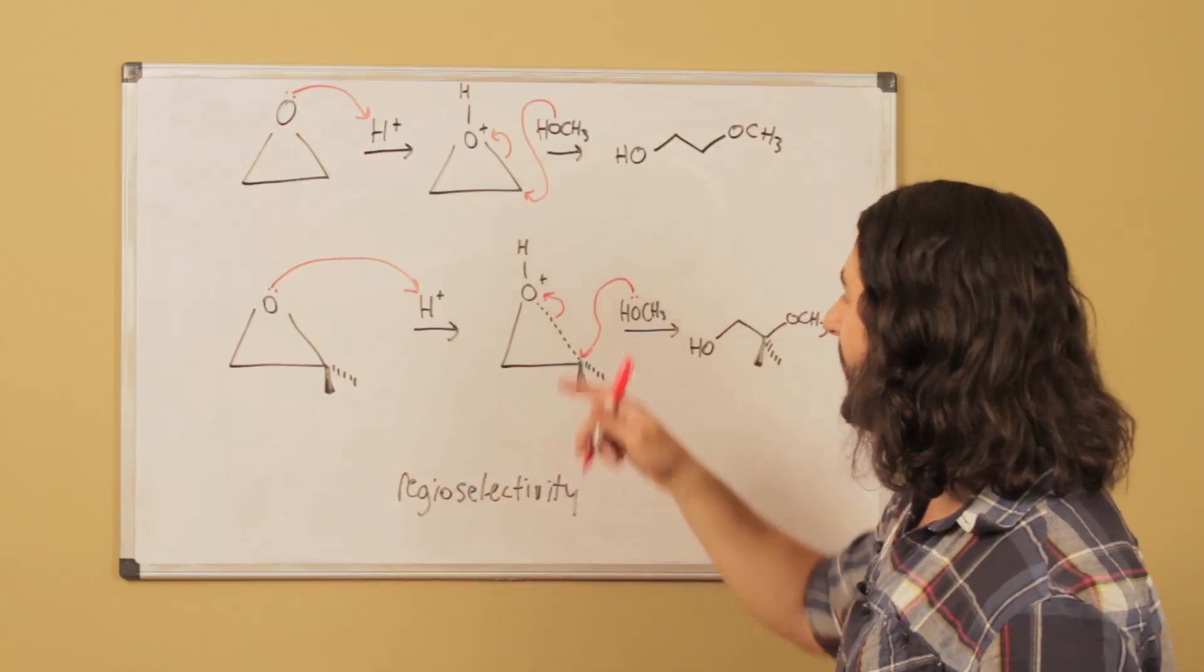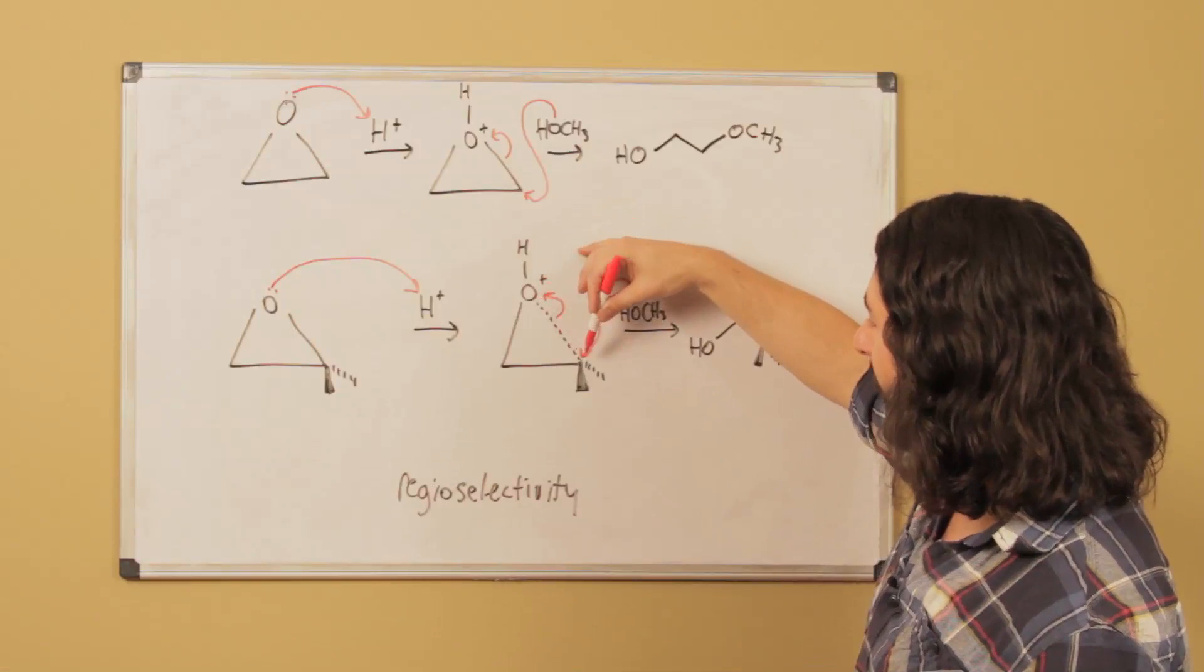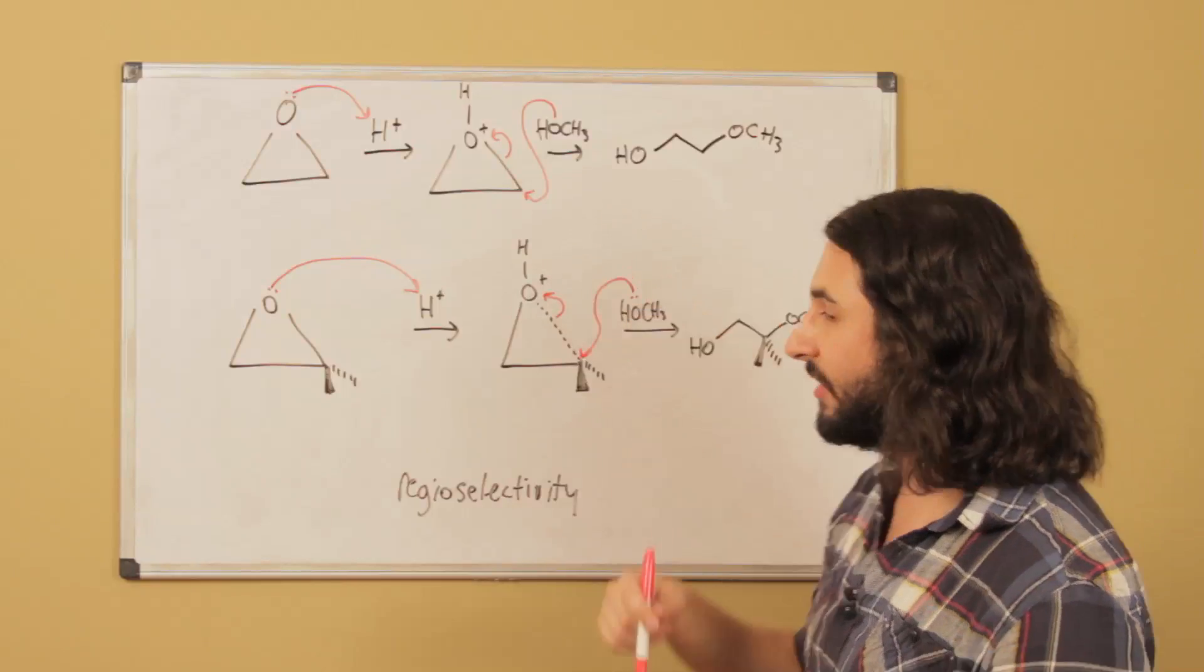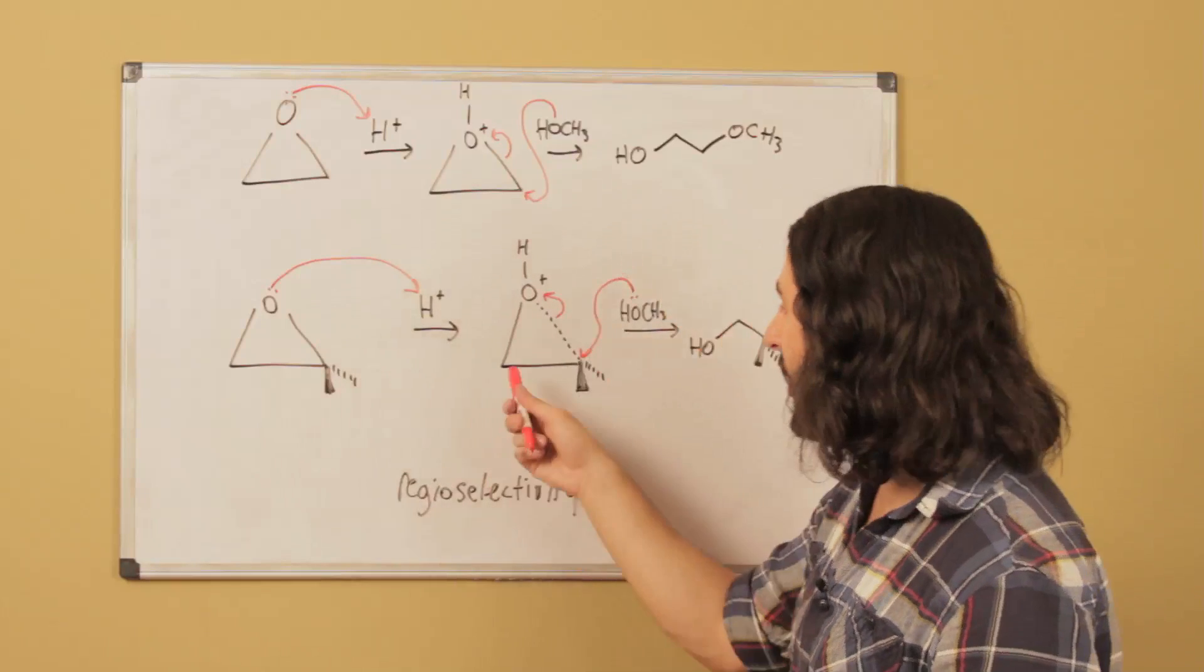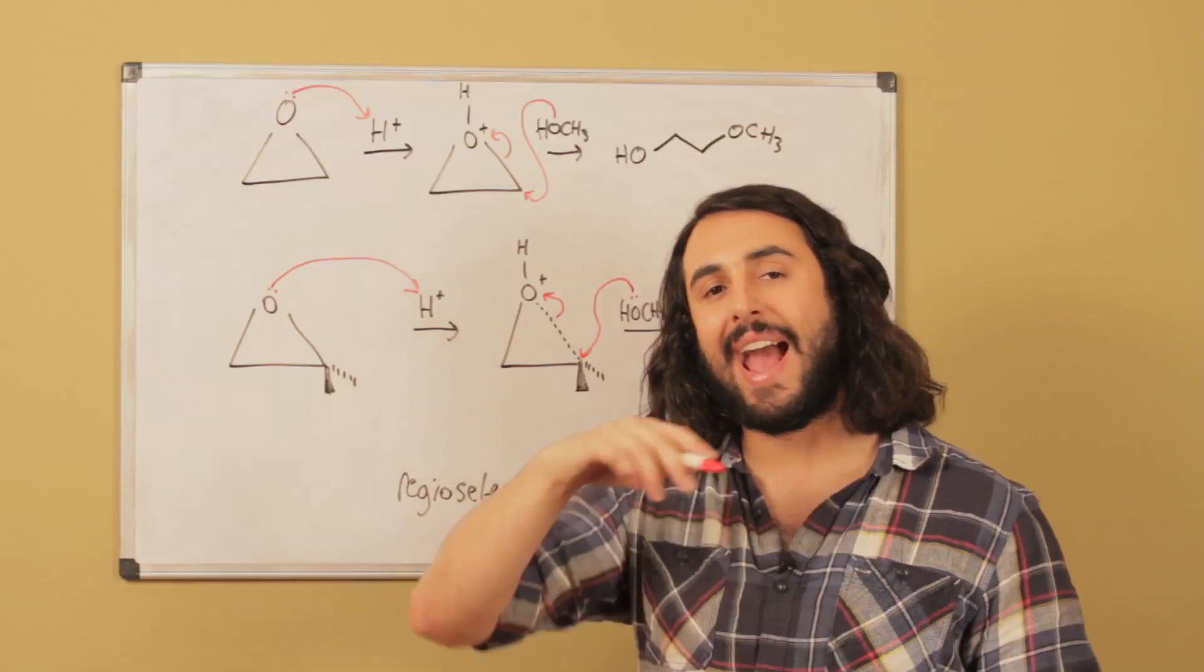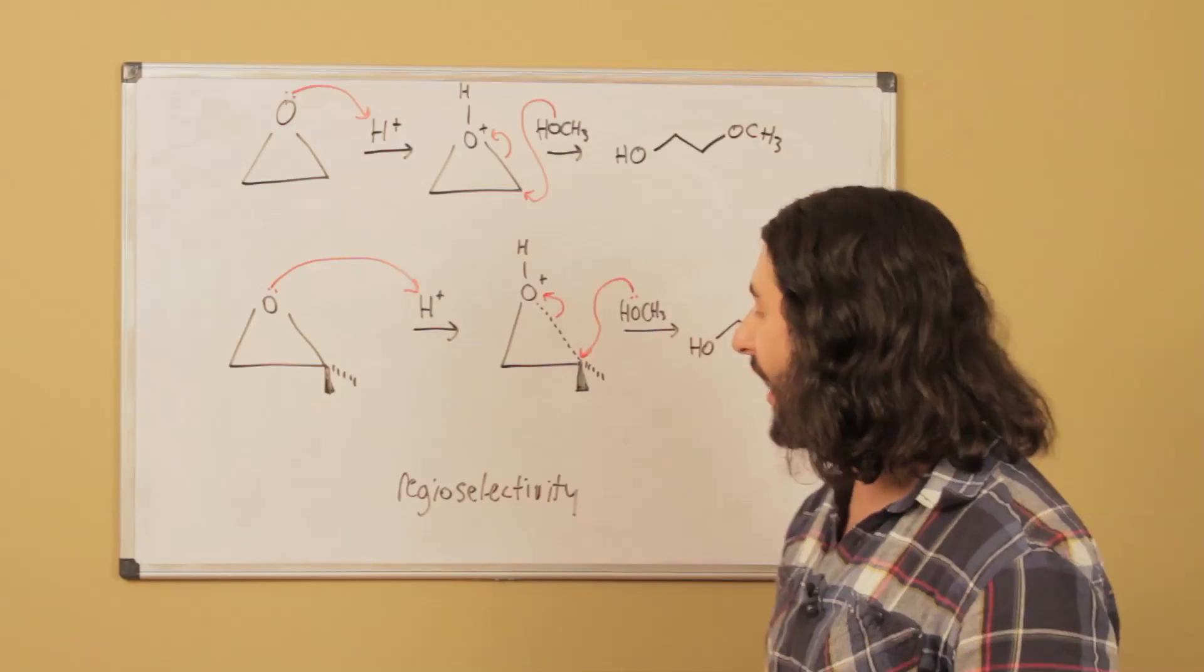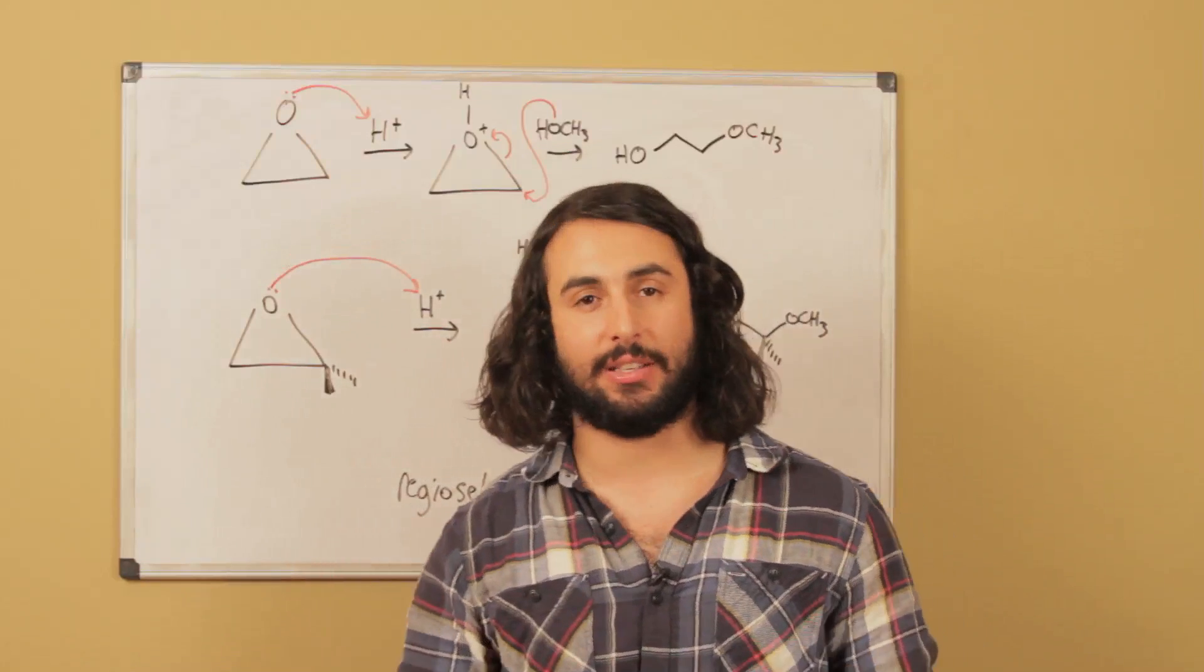This is a regioselectivity that is different from the one that we saw because of these acidic conditions. We're going to see this bond weakening because this carbon is more able to sustain the partial positive charge than this one is. That partial positivity, that electrostatic interaction, outweighs any of the steric influence. That's what an epoxide will do under acidic conditions.